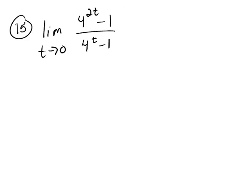Now obviously if you do a direct plug-in, you're going to get 4 to the 0 minus 1 over 4 to the 0 minus 1, which is 4 to the 0 is 1, and so you get the indeterminate form 0 over 0.